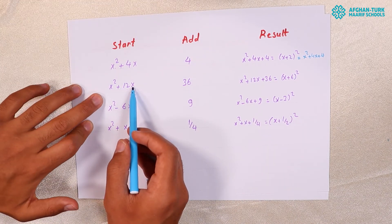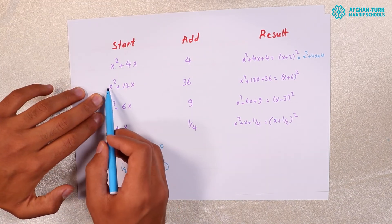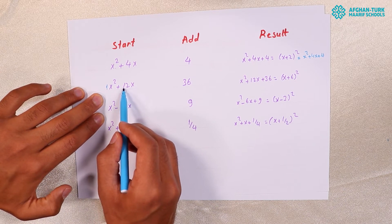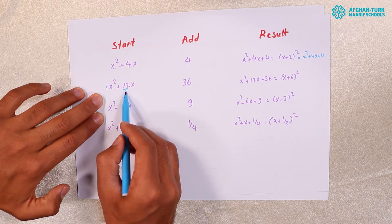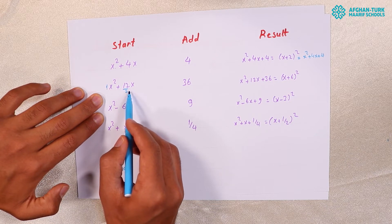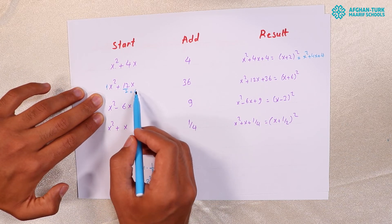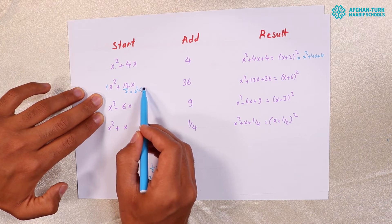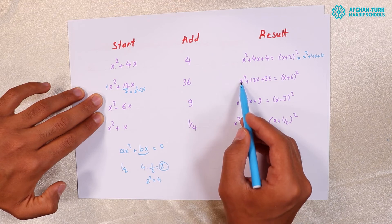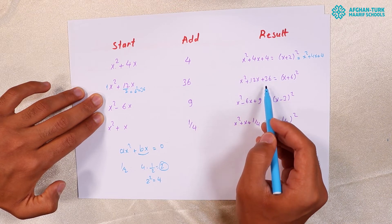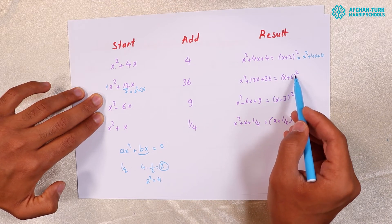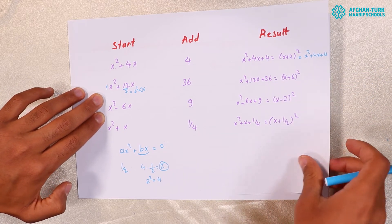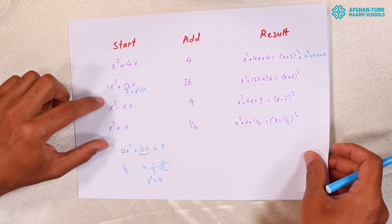Also, consider X squared plus 12X. The coefficient is 1. We divide the X term by 2: 12 divided by 2 equals 6. We square it: 6 to the power of 2 equals 36. We add 36, so X squared plus 12X plus 36 equals X plus 6 to the power of 2. This is a perfect square.